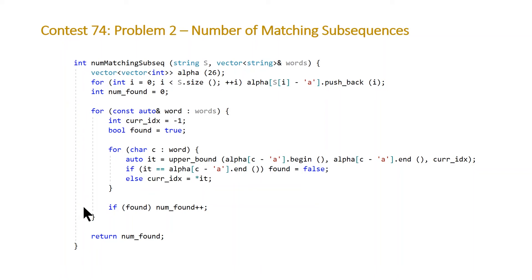Then we initialize our number of words found in our string s equal to zero. And then we're going to come down to this for loop, which we're going to execute for each word in our vector of words. So for each word, we're going to initialize our current index to be negative one and a boolean found equal to true. Then for each character in that word, we're going to make our call to our STL algorithm upper bound. The first two parameters that I mentioned are the begin and past-the-end elements or iterators for our vector corresponding to the current character that we're at. And then we're also passing in as the third parameter, our current index. And if we are able to find a value that is greater than our current index, we're going to come into the else case and just reset our current index. If not, we're going to set our found equal to false. And then once we have finished this loop, if we still have found equal to true, we're going to do a post increment on our number of words found and then return that at the end.